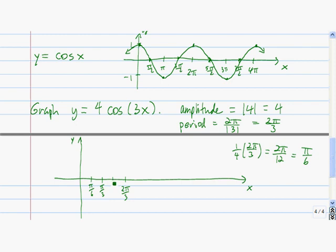Then we go another π over 6, so that's 3π over 6, and that's π over 2. Another π over 6 gets us to 4π over 6, which is 2π over 3.